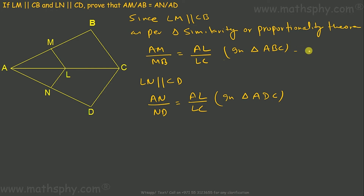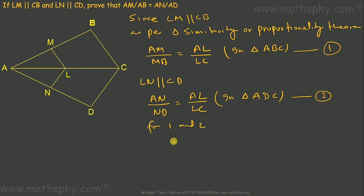Labeling these as equations 1 and 2: from equation 1, AL over LC equals AM over MB, and from equation 2, AL over LC also equals AN over ND. So from 1 and 2, AM over MB equals AN over ND.